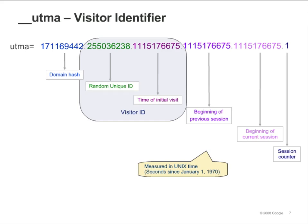Look at your Google Store UTMA cookie. How many times have you visited the Google Store? If you think you've visited more times than is indicated by the cookie, remember that the cookie only includes the number of times you visited from this computer using this browser. Also, if you have cleared your cookies at some point, it is only counting from the last time you cleared your cookies. When does this cookie expire? You should see that the date is two years from the last time you visited.